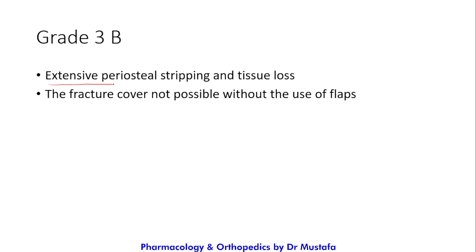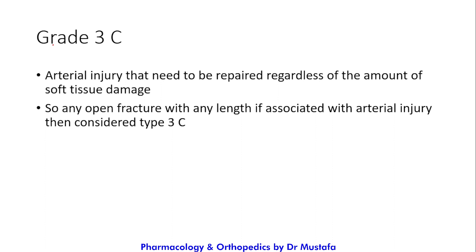Grade three B: there is extensive periosteal stripping and tissue loss, more than in grade three A. Fracture coverage is not possible without the use of flaps. A flap is skin taken with its vascular supply from a site other than the wound and transferred to cover the wound area.